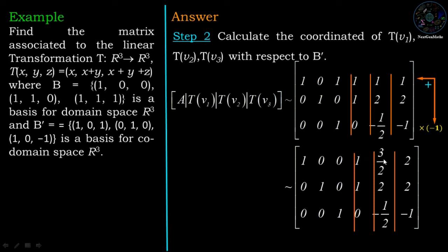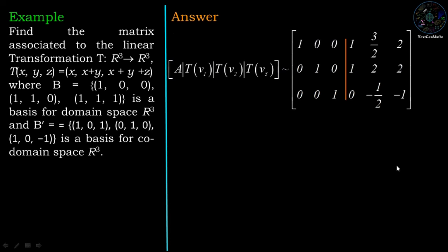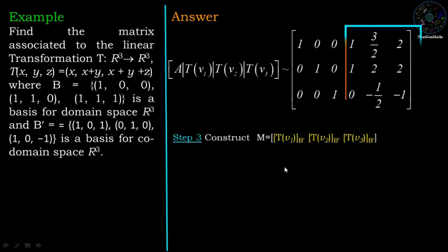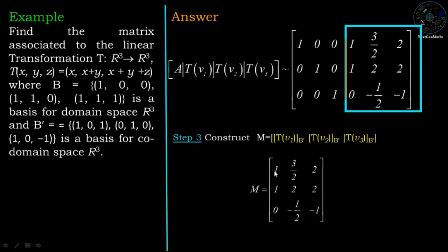The third step is construction of matrix M, which is the remaining part of the augmented matrix. So M = [[1, 3/2, 2], [1, 2, 2], [0, -1/2, -1]]. Hence Tx = Mx.